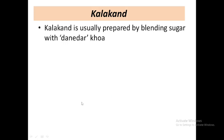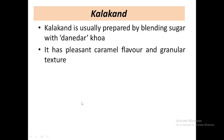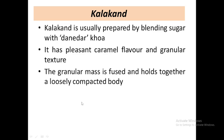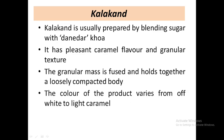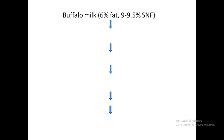The other product is kalakand. Kalakand is a danadar khoa type, based upon danadar type of khoa. It contains some amount of caramel flavor and has a characteristic granular texture. The granular structure is present and the body is quite weak — meaning you can easily break it. The body is loose and not compact.